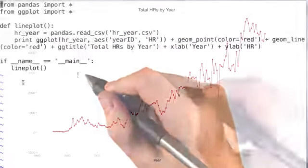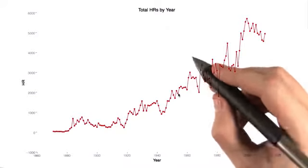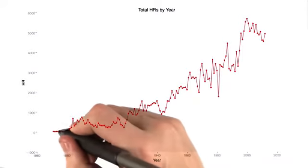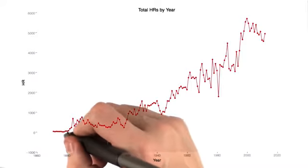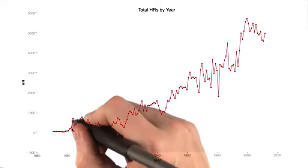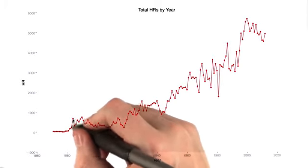Now let's see what this produces. Here's the plot that this generates. We see that we have a bunch of points that are red, where we indicate the number of home runs hit every year. They're connected by red lines, which gives us some sense of the rate of change.